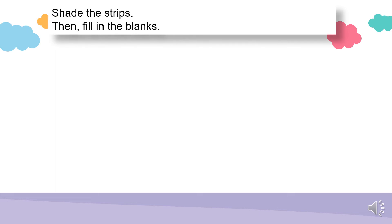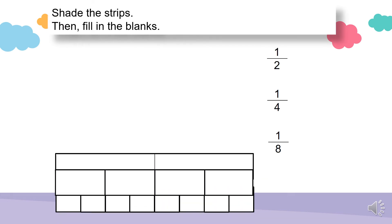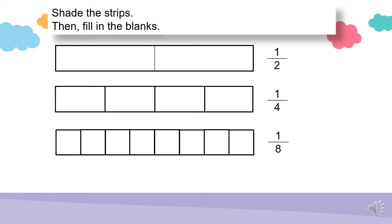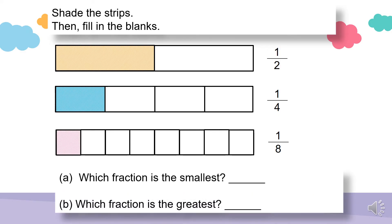Now let's arrange more fractions with unlike denominators. Here we have 1 over 2, 1 over 4, and 1 over 8. In the first fraction strip, only 1 out of the 2 equal parts is shaded. For 1 over 4, only 1 out of the 4 equal parts is shaded. For 1 over 8, only 1 out of the 8 equal parts is shaded. So which fraction is the smallest? 1 over 8. Which fraction is the greatest? Which one is shaded most? 1 over 2.